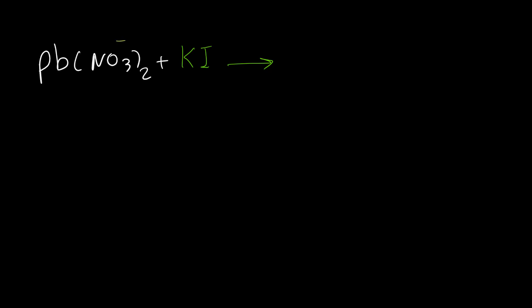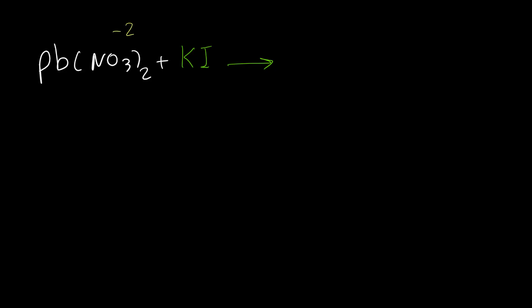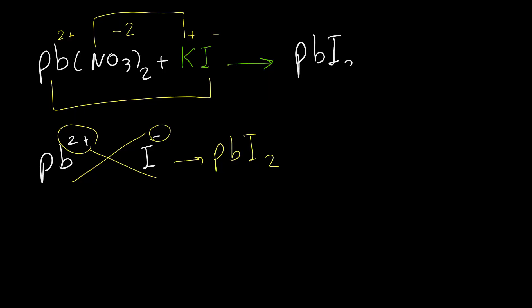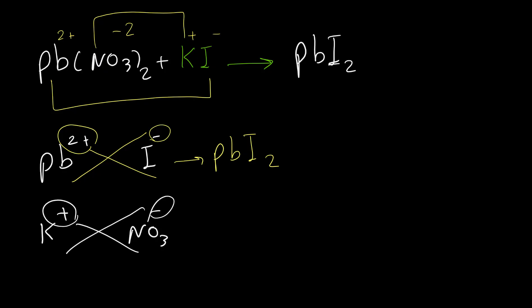The nitrate ion has a negative one charge, so when we have two nitrates the total charge for the anions is negative two. So lead must be positive two to neutralize the ionic compound. Potassium belongs to group one and its charge is always positive one, and iodide is always negative one. For lead and iodide: lead has positive two and iodide has negative one, so when we criss-cross the charges the formula for lead iodide is PbI₂. The second product is between potassium and nitrate — both have charge of one — so the formula is potassium nitrate, KNO₃.